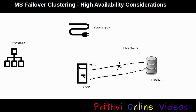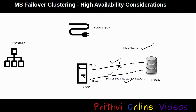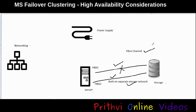So let's connect a second HBA card to our storage. Now we have two paths connecting our server to the storage, but we should make sure both connections go through different storage networks so that in case of any disconnection or HBA failure, we still have a path available — giving us a highly available connectivity with our storage device.